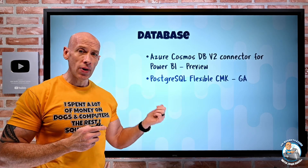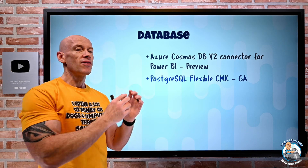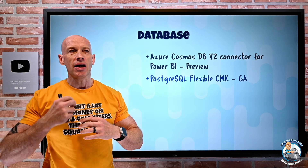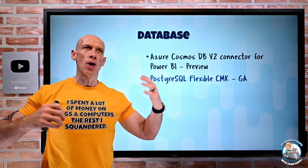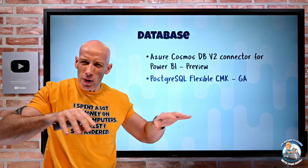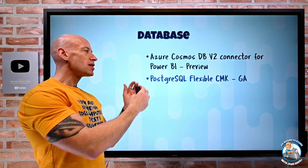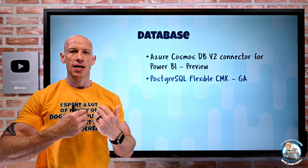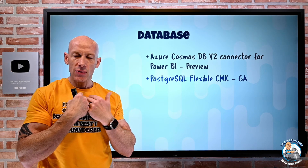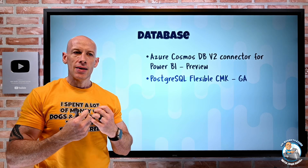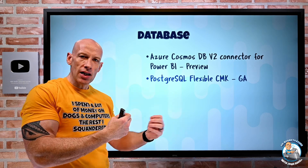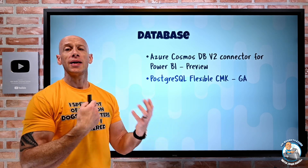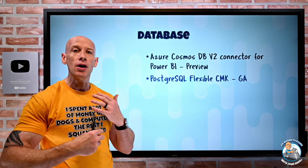PostgreSQL Flexible now has customer-managed key in GA. The Flexible SKUs are the newer versions — they're VM-based. I can stop-start the VMs, I can use burstable SKUs, I can have optional high availability, I can tweak all of the settings. So now with this Flexible version of PostgreSQL, I can have that key encryption key in my Key Vault, so I have complete control of it. And then that's actually used to then decrypt the data encryption keys that encrypt the various blocks and partitions on disk. So I can now have complete control of the rotation of that key.